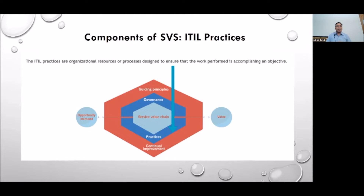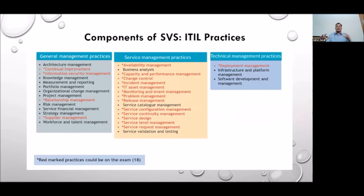Once we are done with the service value chain, the next component in the service value system is the practices — also called ITIL practices. These will be discussed in detail in module six. The practices are categorized into three parts: general management practices, service management practices, and technical management practices. For the ITIL Foundation framework, we will focus only on those marked in red on the slide, excluding those in black which are outside the core ITIL 4 Foundation curriculum.